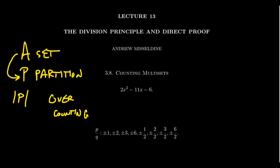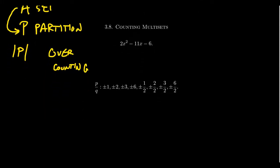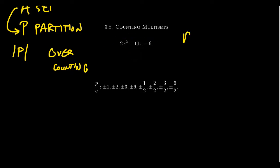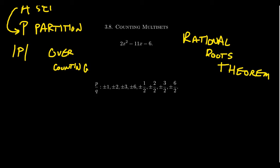To illustrate that, let me take a very simple classic problem from polynomial theory and consider how one can overcount the potential rational roots. Consider the polynomial 2x² minus 11x minus 6. By the rational roots theorem, we have a list of potential rational roots. The theorem tells us that all possible rational roots can be found by taking the divisors of the constant term and dividing them by the divisors of the leading coefficient. So if you take all the divisors of 6 — which would be 1, 2, 3, and 6 — and divide by all the possible divisors of 2. These are integer divisors, so they can be plus or minus: plus or minus 1, plus or minus 2, plus or minus 3, plus or minus 6.